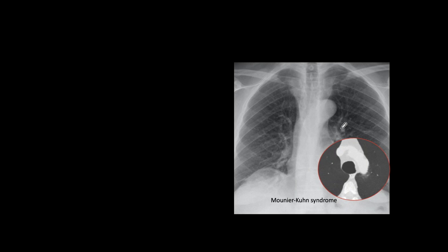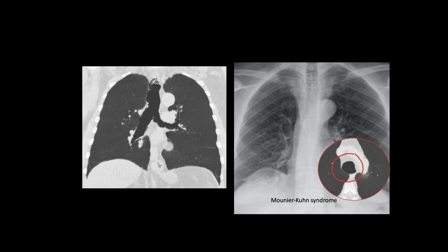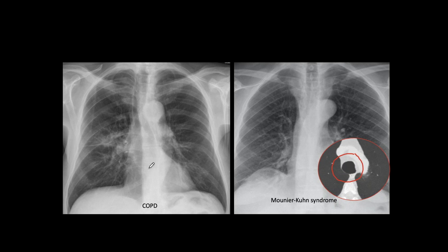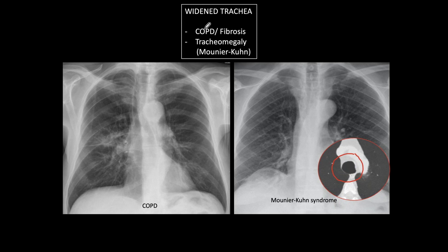The opposite is a widened trachea. Many residents, when they see a widened trachea, always mention Mounier-Kuhn syndrome — tracheobronchomegaly — which is a congenital disease with laxity of the cartilage involving the trachea and bronchi. Still, in daily practice, the most common cause of a large widened trachea is either COPD or pulmonary fibrosis. So: widened trachea — think COPD or fibrosis, and if you're in an examination, always mention tracheobronchomegaly or Mounier-Kuhn syndrome.